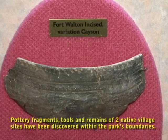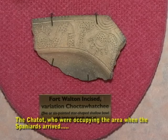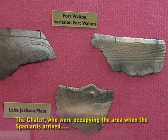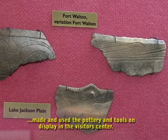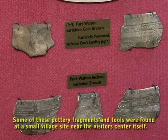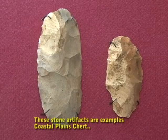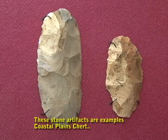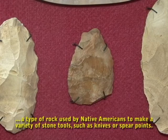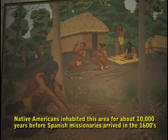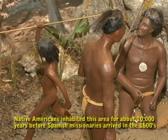Clay in the caves provided a useful raw material for creating pottery. Pottery fragments, tools, and the remains of two native village sites have been discovered within the park's boundaries. The Chatot, who were occupying the area when the Spaniards arrived, made and used the pottery and tools on display in the visitor center. Some of these pottery fragments and tools were found at a small village site near the visitor center itself. These stone artifacts are examples of coastal plain chert, a type of rock used by Native Americans to make a variety of stone tools, such as knives or spear points.